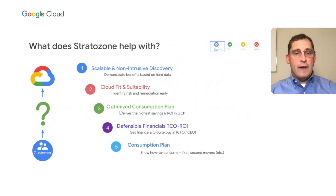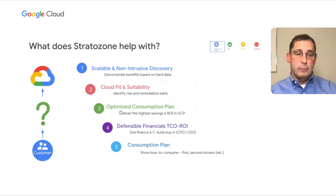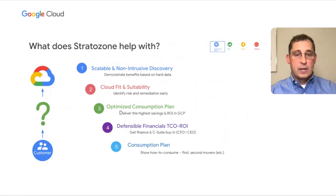The second thing it does is evaluate each of your workloads for its suitability for the cloud, gives you a CloudFit score, and helps you identify what remediations you may need to take in order to move it. The third part is optimizing your consumption plan and identifying where the best place is to move a particular application to Google. The fourth step is providing you with a ROI — a return on investment paper you can share with your executives and stakeholders. And the last step is developing insights into what you should move first, second, and third in your journey.